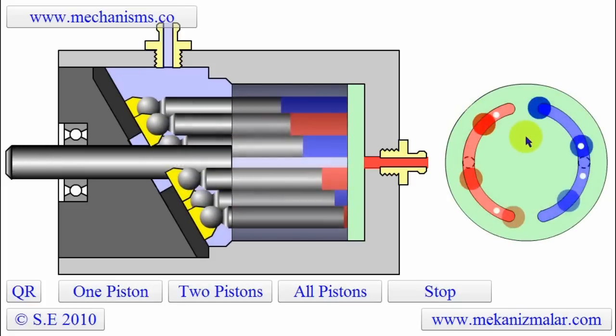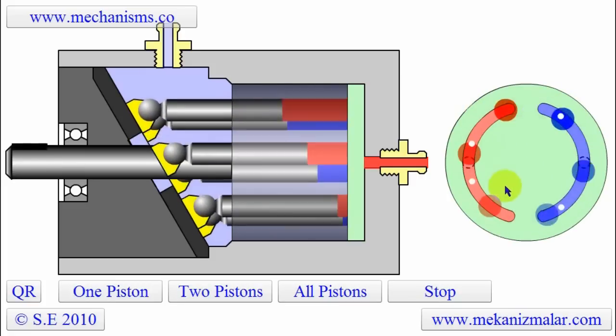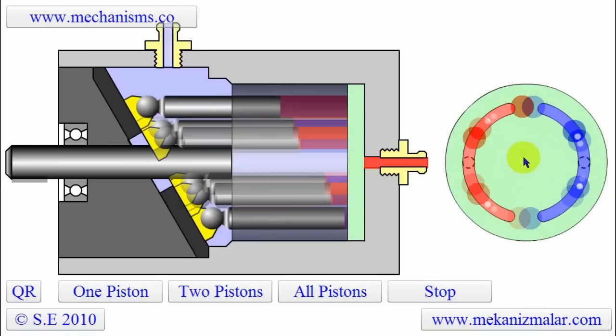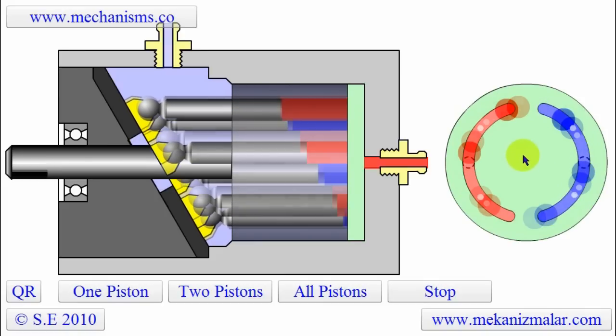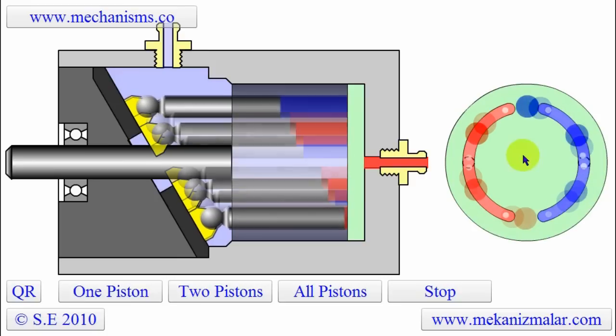But how can we tell whether a port plate disc represents a pump or a motor just by looking at it? Unfortunately, we can't, since we don't know whether the piston is moving toward the port plate or not.